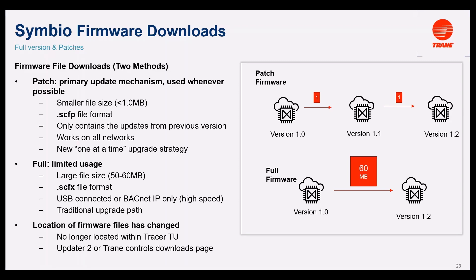The idea with these patches is that you can use them through all the networks — for example, backend MSTP or RS485. The idea here is that you are going from one version to another, one by one. You can go from version 1.0 to version 1.1 with one patch, and then with another patch go from version 1.1 to version 1.2.